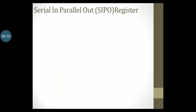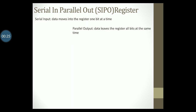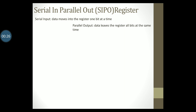Let us start with the serial in parallel out shift register, better known as SIPO. In this shift register, data enters the register one bit at a time, that is in a serial manner, and the data moves out of the register in parallel form — that is, all the bits are made available at the output at the same time.